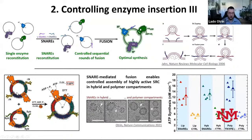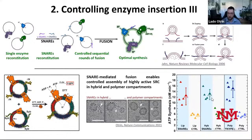We reconstitute ATP synthase optimally with one half of the SNARE pair, reconstitute BO3 oxidase with the other half, fuse the system, and measure ATP production. Remarkably, comparing the final activity in lipid, hybrid, and polymer vesicles, not only can we now match the activity in hybrids and polymersomes to that of liposomes, but we can even surpass it in polymersomes because polymersomes fuse more efficiently.